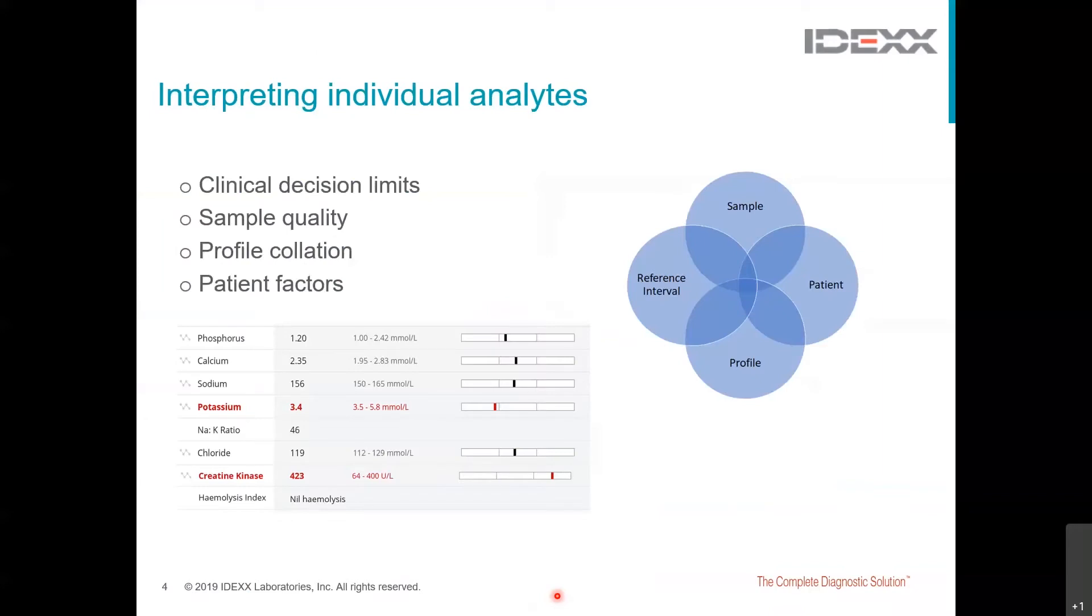So how do you know whether obtaining a value outside the reference interval is clinically relevant? This is one of the particular challenges for data analysis for both new graduates and experienced vets. And unfortunately, there simply aren't details on this in textbooks, and it's something that really we just start to pick up by experience. But there are some general rules of thumb that we can use. Firstly, the degree of change or what we call the clinical decision limit is published. The American Society for Veterinary Clinical Pathology, their website is a great source for this.